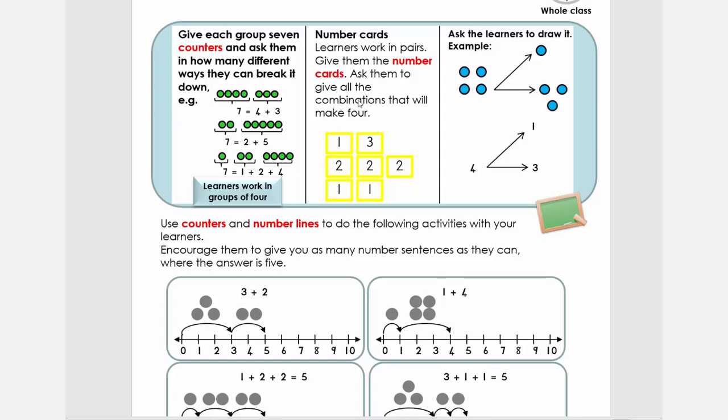Then the next activity, you're going to give the learner some number cards. You could just make your own cards with numbers on it. They can write down these numbers on pieces of paper. Then they need to give you all the combinations that will give you an answer of four. I want you to pause and do this activity.